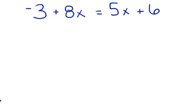Today we're going to talk about equations with variables on both sides. Basically what that means is we've got 8x here and 5x here, and they're on opposite sides of the equal sign. When you're doing your equations, remember at the very end you want to end up with x equals something. So we need to take all of our x's and move them to one side — we're going to move them to the left.